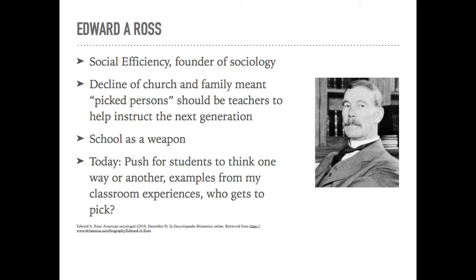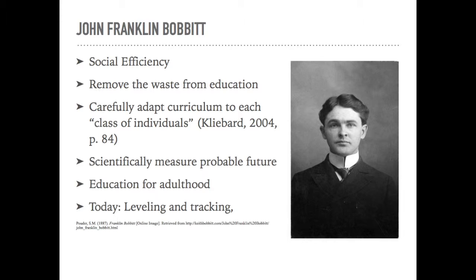Bobbitt was another big player in the social efficiency movement, and his big push was to remove the waste from education. He believed that educators needed to carefully adapt curriculum to each class of individuals. He also supported the use of scientific measurement to predict the student's probable role in life, and therefore the student could get the correct curriculum. A famous quote from him, in direct contrast to Dewey: education is primarily for adult life, not for child life. Its fundamental responsibility is to prepare for the 50 years of adulthood, not for the 20 years of childhood and youth. Found on page 103. This reminded me of the current practice of testing students and placing them in high, medium, or low classes.